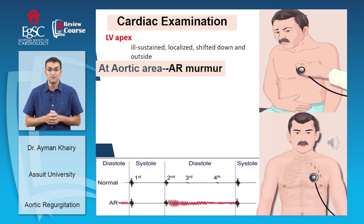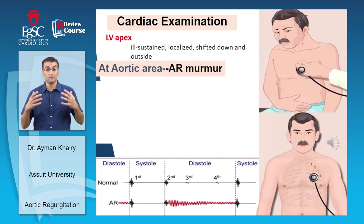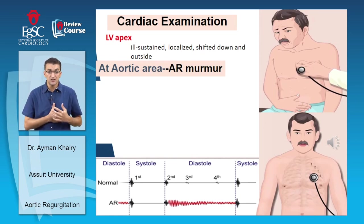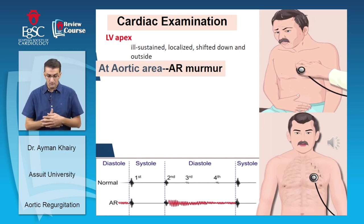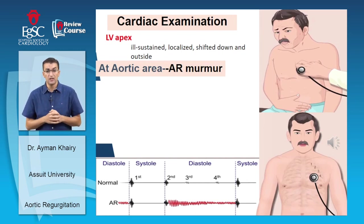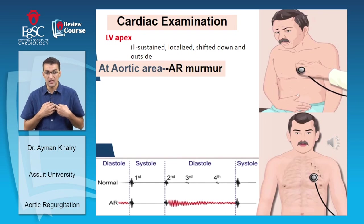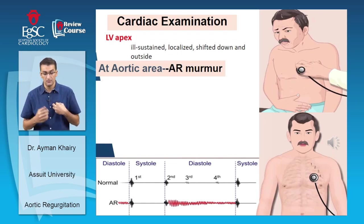On examination, the left ventricle is dilated, giving a displaced, sustained apex beat shifted downward and outward. On the aortic area and second aortic area, you can hear the aortic murmur.